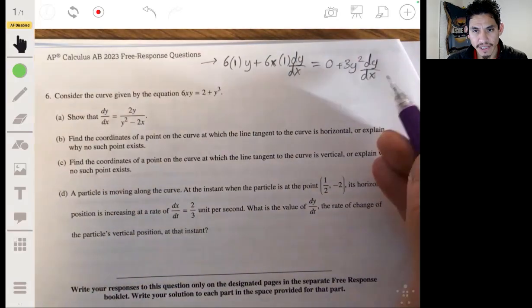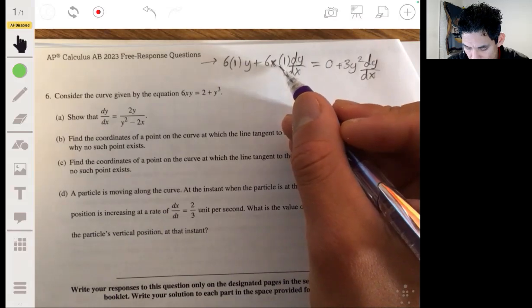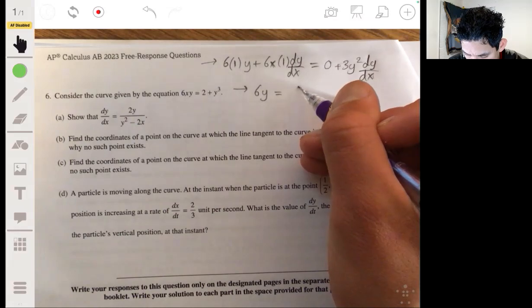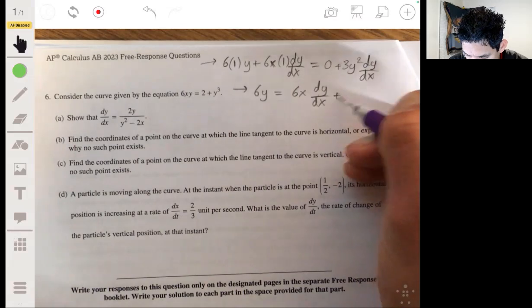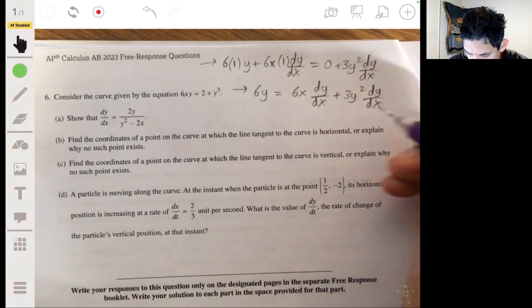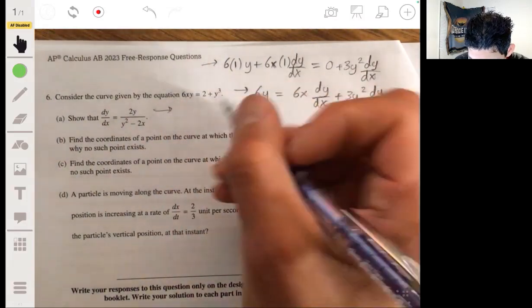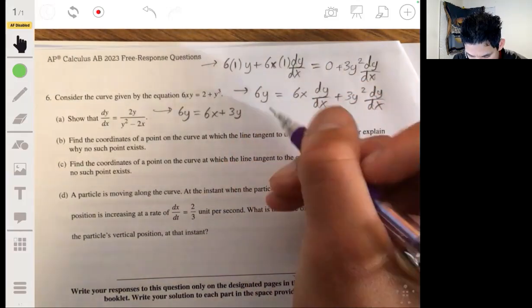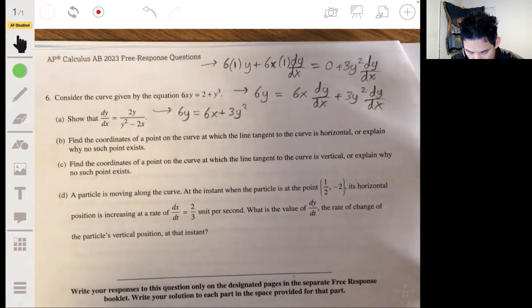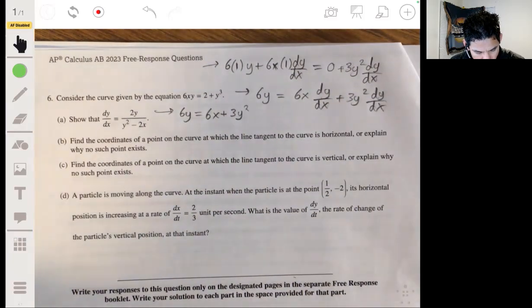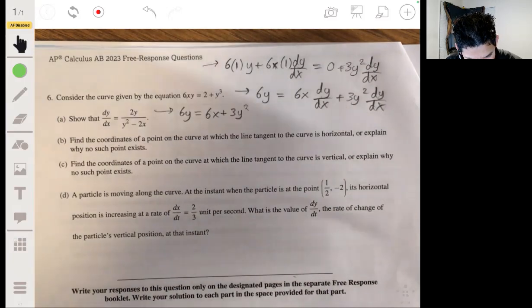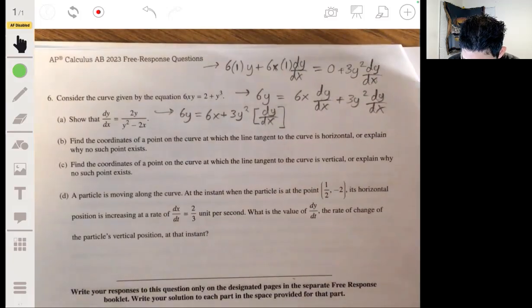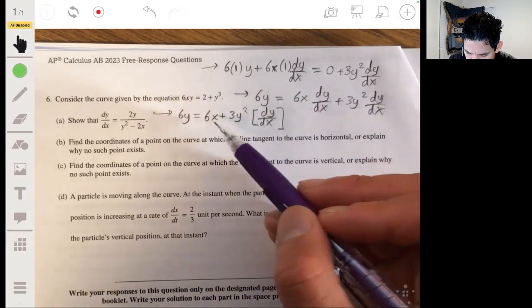And now we simply solve for dy/dx. Treat it like it's a variable. So let's subtract this and bring it to the right side. So on the left, we'll have 6y is equal to... we're going to factor... And my eraser got jammed again.